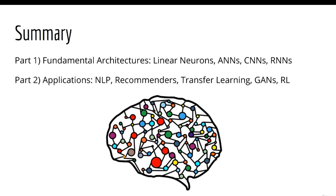To summarize, the outline of the course is like this. We can split it into two parts: part one, architectures, and part two, applications. In part one, we discuss the fundamental architectures such as linear models, ANNs, CNNs, and RNNs. In part two, we discuss applications such as NLP, recommender systems, GANs, transfer learning, reinforcement learning, and possibly more. Thanks for listening, and I'll see you in the next lecture.